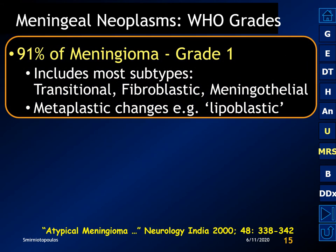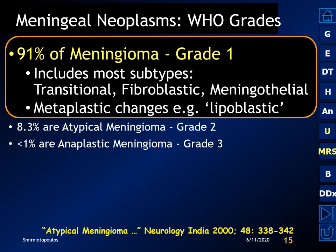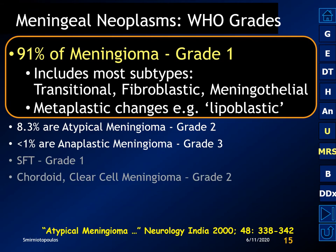The overwhelming majority of meningiomas — more than 90% — are WHO grade 1 tumors. This includes several different histologic subtypes, which all enjoy the same good prognosis. Less than 10% of meningiomas are going to be atypical or anaplastic lesions, which will have a shorter time to recurrence and a higher incidence of recurrence.